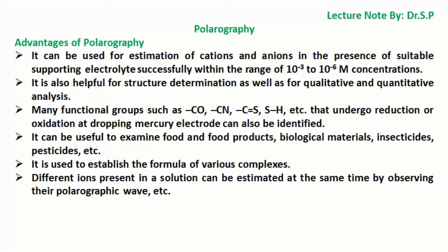Advantages of polarography: it can be used for estimation of cations and anions in the presence of suitable supporting electrolytes within the range of 10⁻³ to 10⁻⁶ molar concentrations. It is helpful for structure determination as well as qualitative and quantitative analysis. Many functional groups such as carbonyl (C=O), cyanide (CN), C=S, and thiol (SH) that undergo reduction or oxidation at the dropping mercury electrode can be identified. It can examine food products, biological materials, insecticides, pesticides, etc. It is used to establish the formula of various complexes, and different ions in a solution can be estimated simultaneously by observing their polarographic waves.